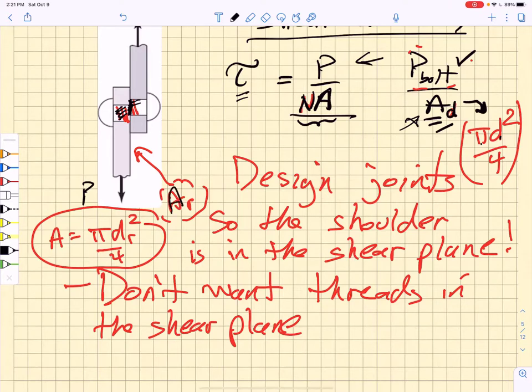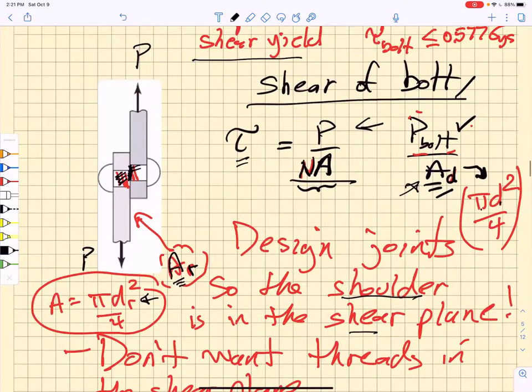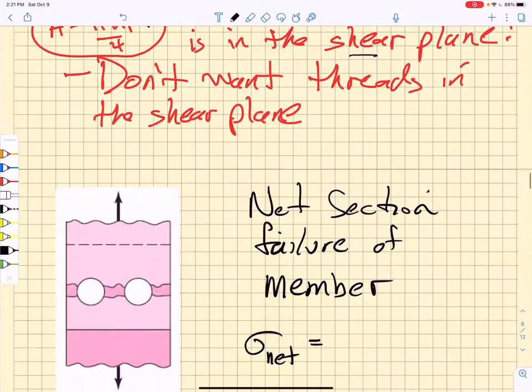Instead, you'd be using AR, which is the root cross-sectional area, and that would be associated with the root diameter. So you make sure the shoulder of the bolt is in the shear plane. You don't want the threads in the shear plane. So what you do is you calculate the shear stress of the bolt, and then you compare that shear stress to the yield strength of the bolt.